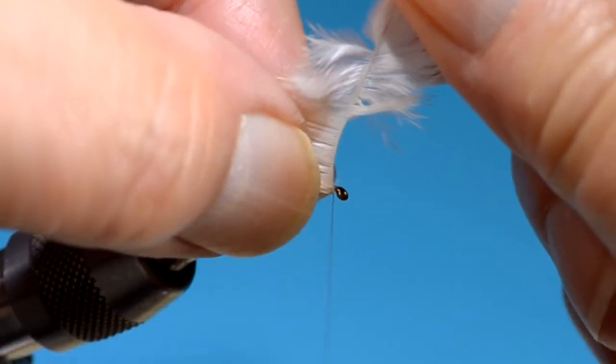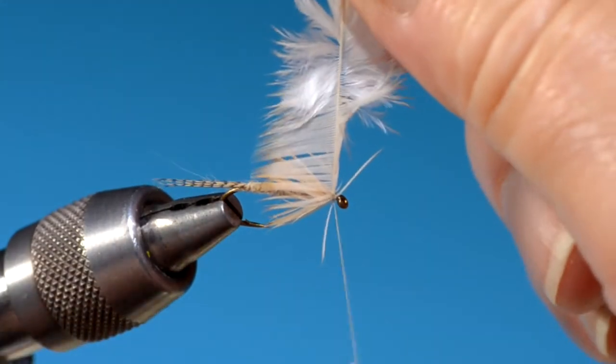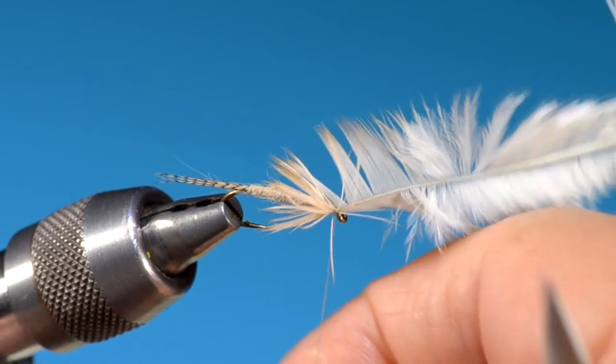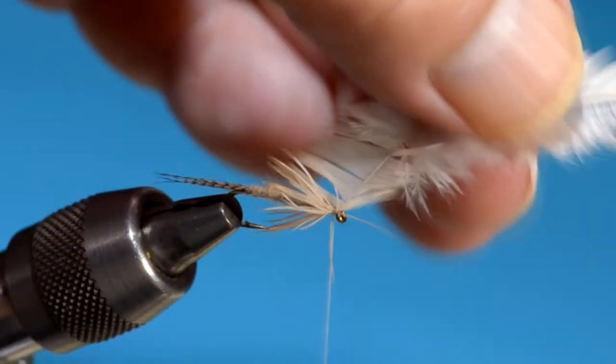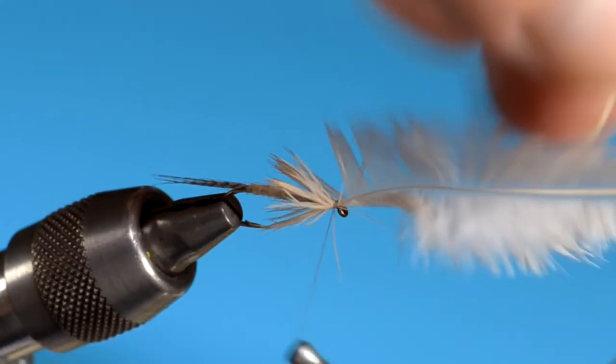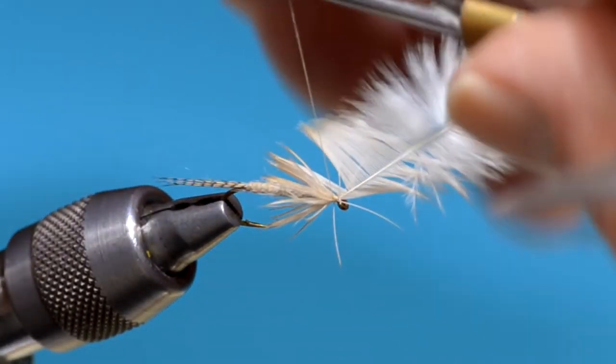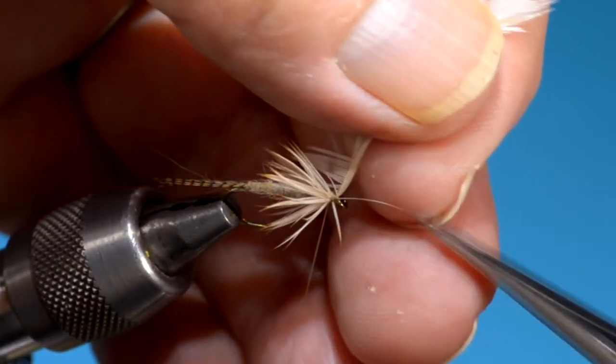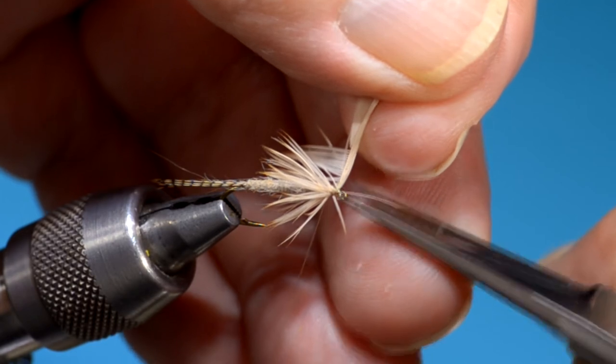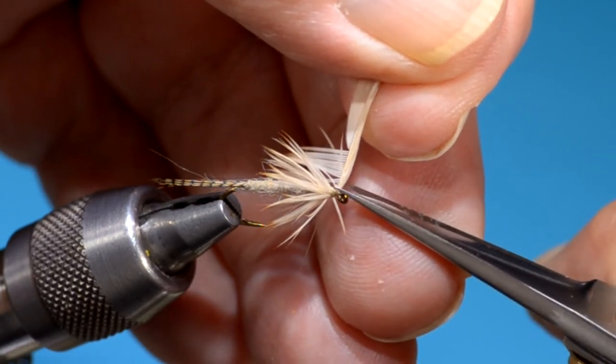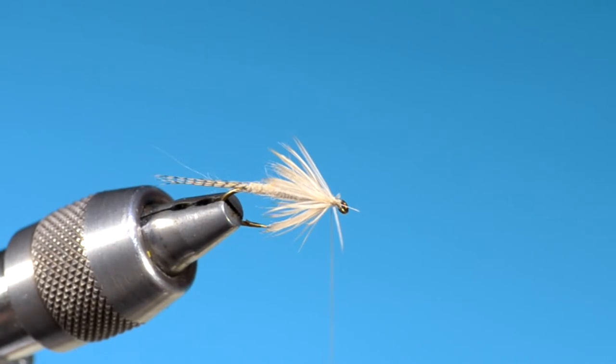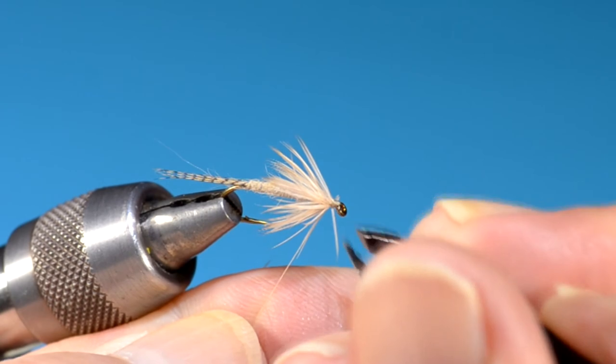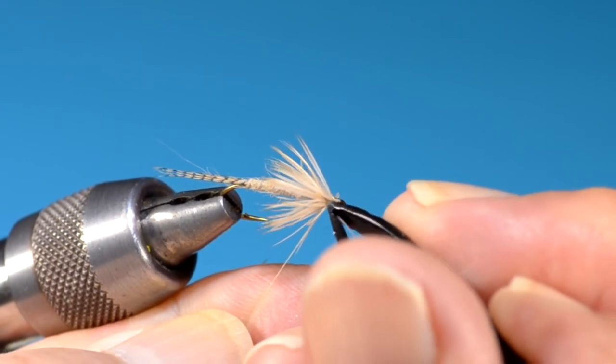Some places I haven't fished much are the Delaware and the Beaver Kill. So, it's entirely possible that they're lighter there. This is a big hatch all through the east. Up where I'm from, it was probably the primary hatch up in the Adirondacks.